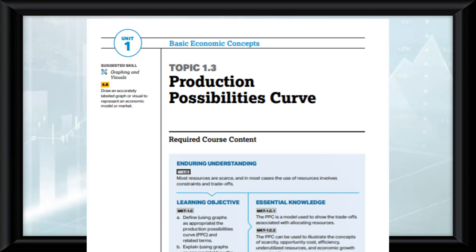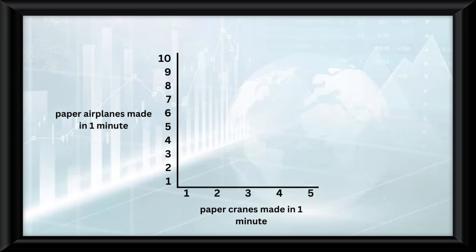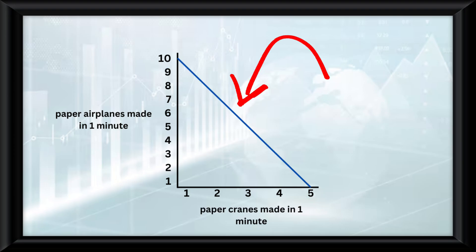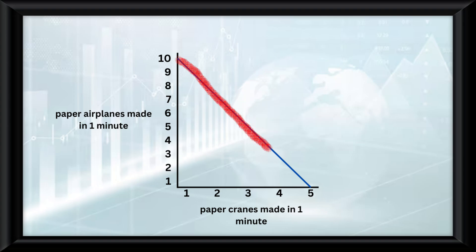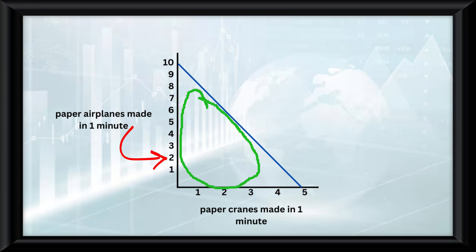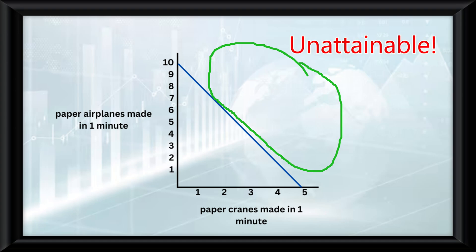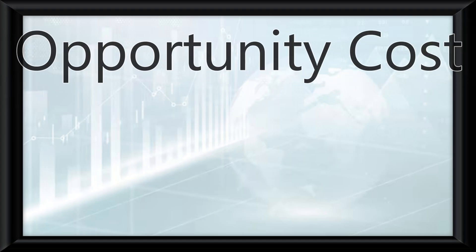Topic 1.3 is all about production possibility curves in economics. The graph shows the amount of paper airplanes I can make in a minute, being 10, and the amount of paper cranes I can make in a minute, being 5. The line on the graph creates a production possibility curve, used to show the trade-offs associated with allocating resources. If I wanted to make eight paper airplanes in a minute, the trade-off would be not making four paper cranes. Any production made below the curve would be inefficient, anything on the line is efficient, and anything outside the curve is virtually unattainable because of scarcity.